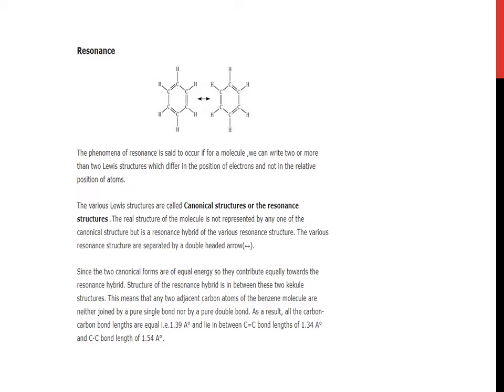Structure of the resonance hybrid is in between these two kekule structures. This means that any two adjacent carbon atoms of the benzene molecule are neither joined by a pure single bond nor by a pure double bond. As a result, all the carbon bond lengths are equal, 1.39 angstrom, and lies in between C=C bond, 1.34 angstrom, and C-C bond, 1.54 angstrom.